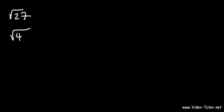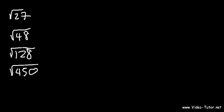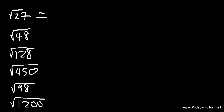For practice, try these examples: the square root of 27, the square root of 48, the square root of 128, the square root of 450, the square root of 98, and the square root of 1200. Feel free to pause the video and try these problems. For the first one, 9 goes into 27. 9 times 3 is 27, and the square root of 9 is 3, so this simplifies to 3 root 3.